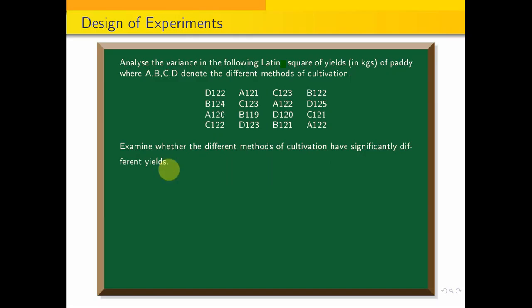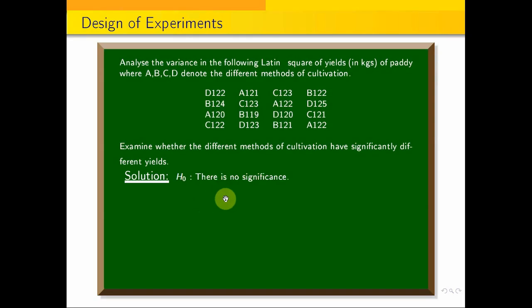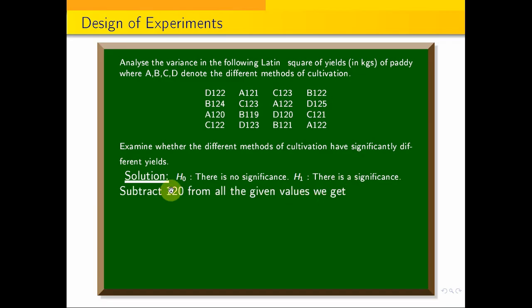This is our analysis. In the Latin square question, this is the three-way classification. We can set hypothesis H0 for all the problems. H0: there is no significance. H1: there is significance.